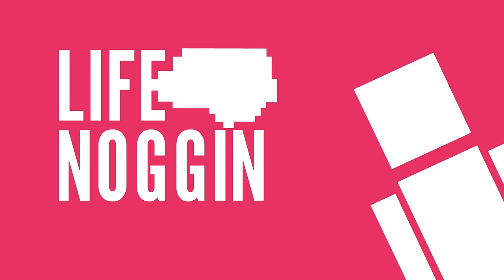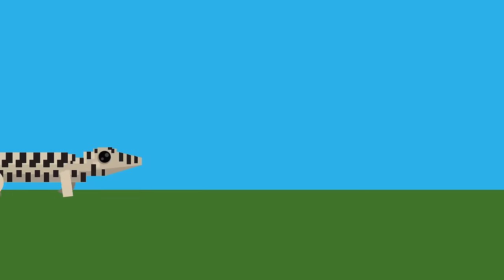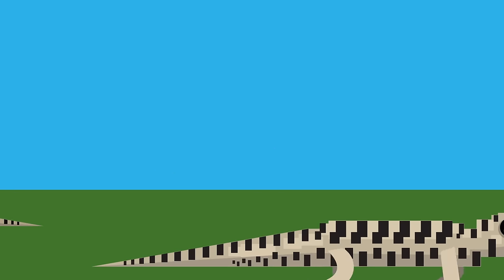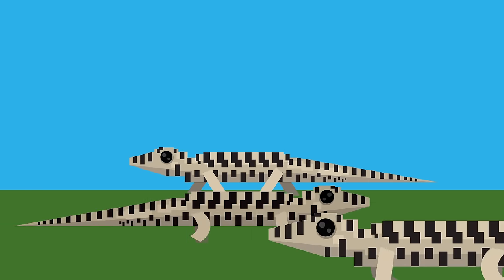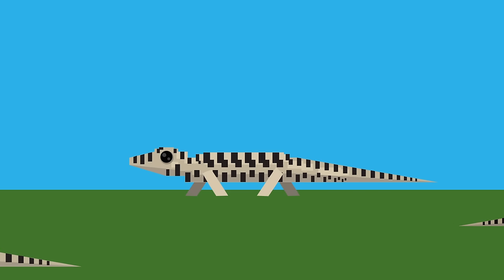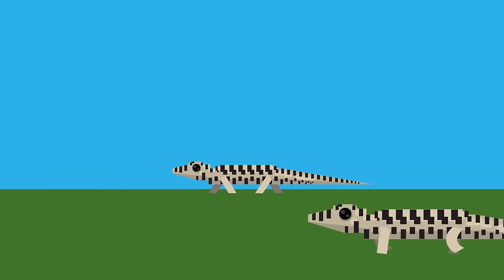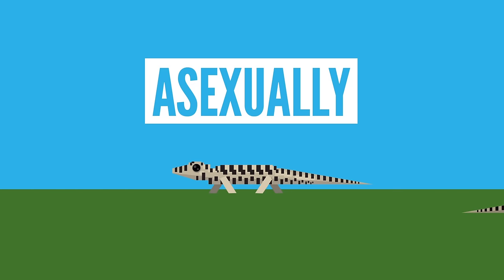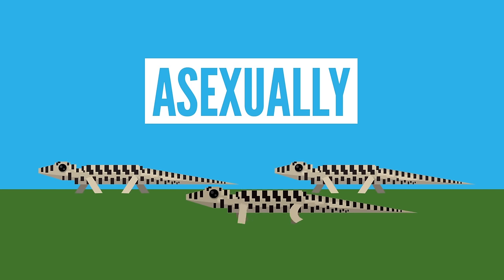Hey there! Welcome to Life Noggin! There is a species of whiptail lizards in which every single lizard is female. There are no males to mate with, yet their species lives on. And this is because these lady lizards reproduce asexually, creating offspring that are genetic copies of themselves.